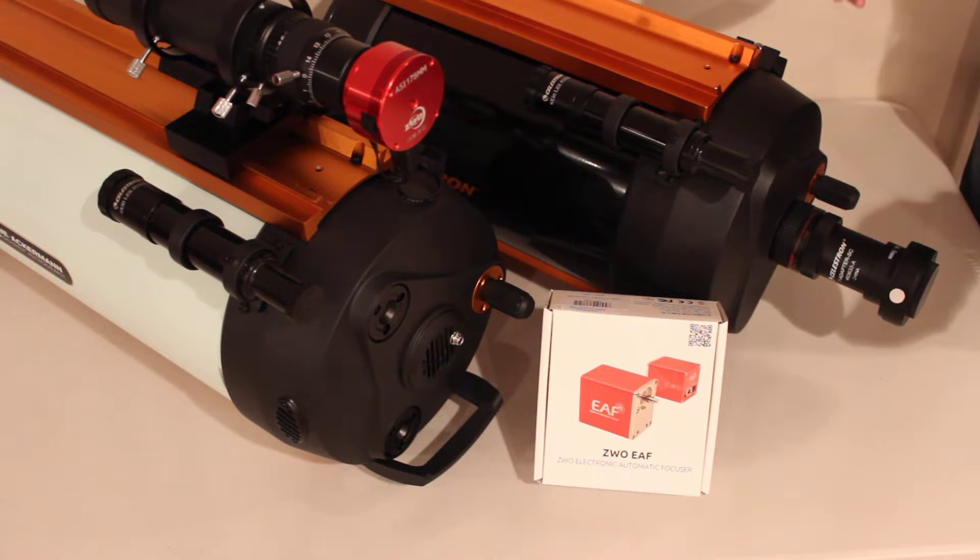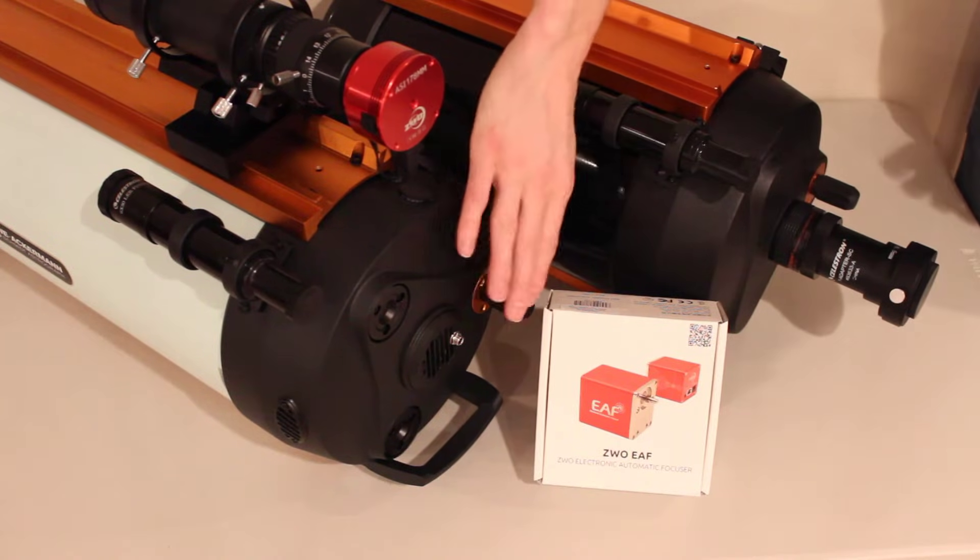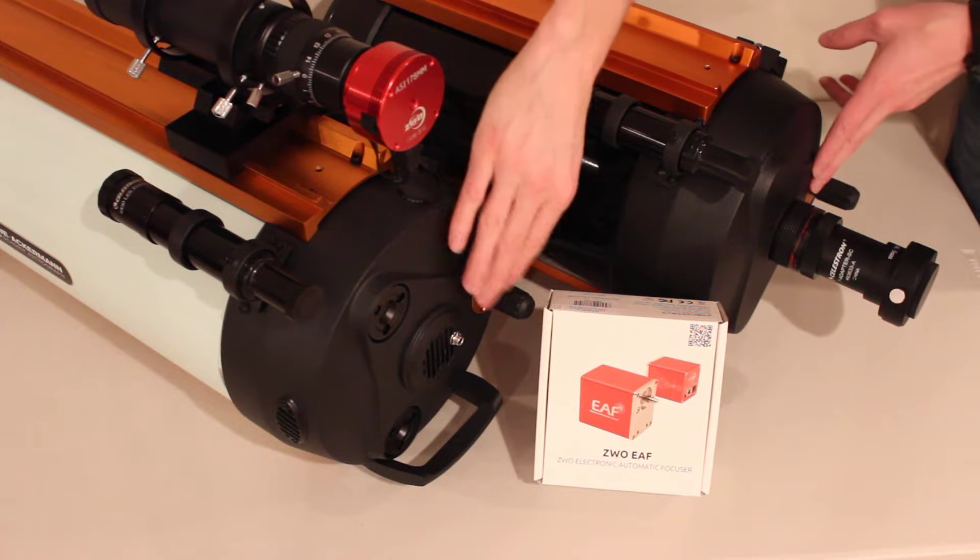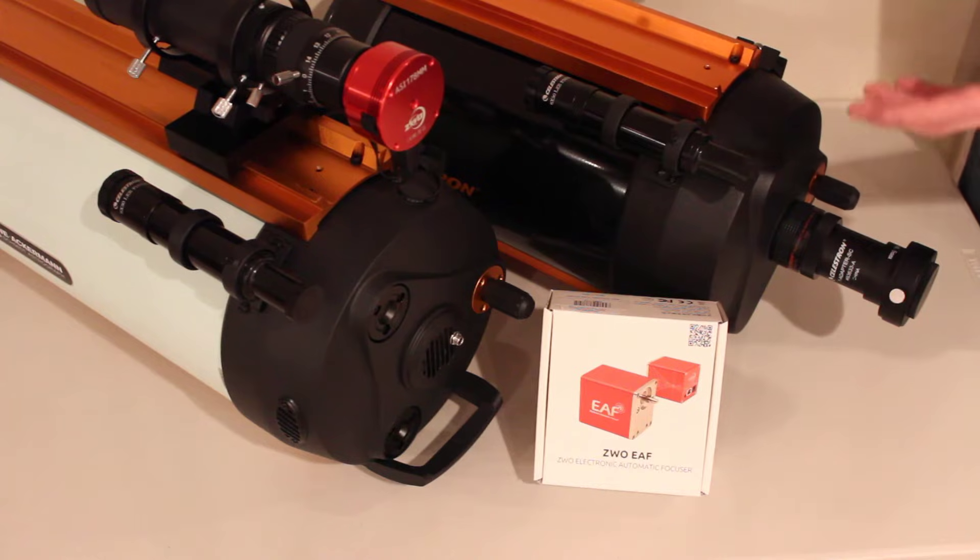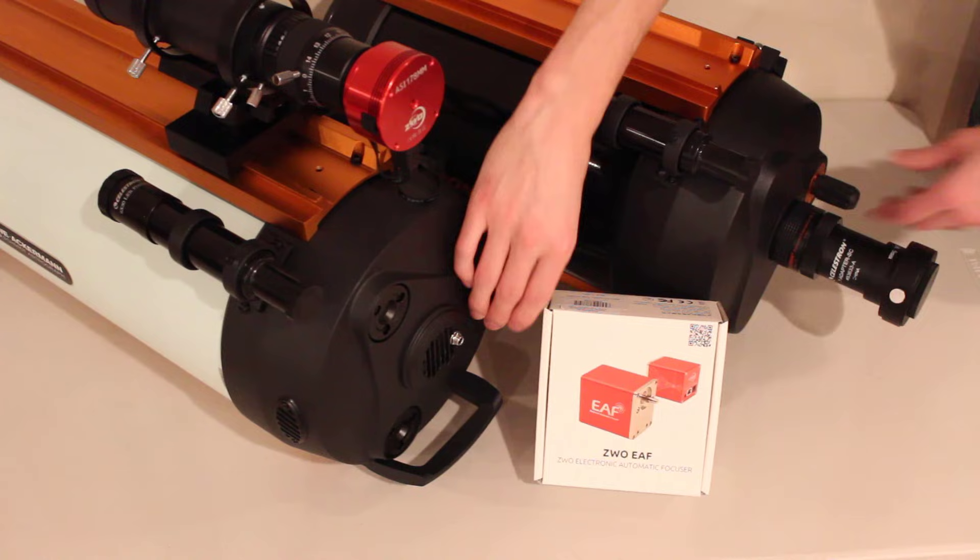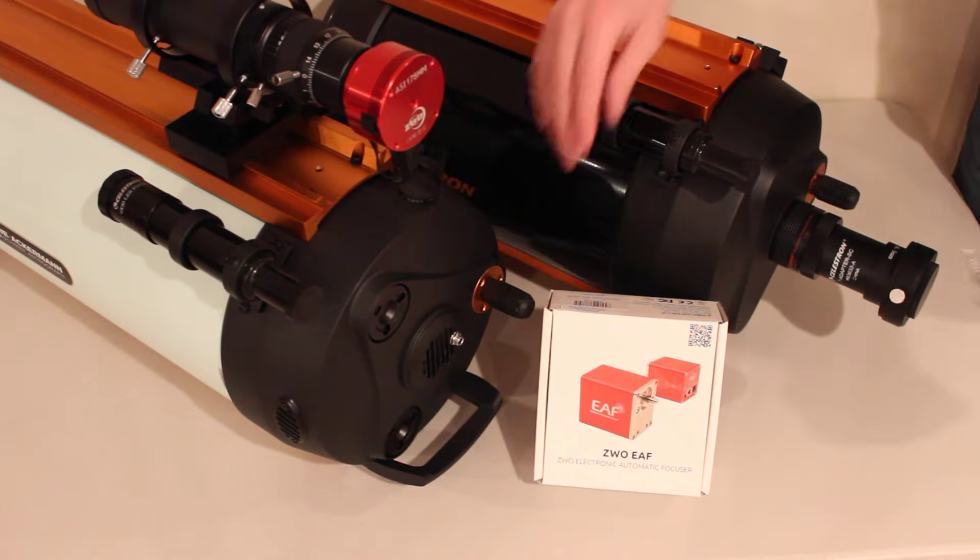As I mentioned, this installation video is for the standard version of the Celestron focusers on the Schmidt-Cassegrain and the RASA-8. If you have a FeatherTouch focuser, ZWO makes a separate bracket for that. It's nice they now make one for these standard versions, so that's what I'm going to be showing you how to install.